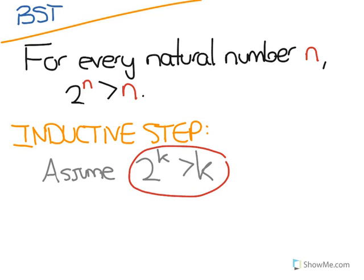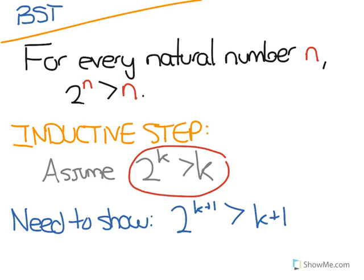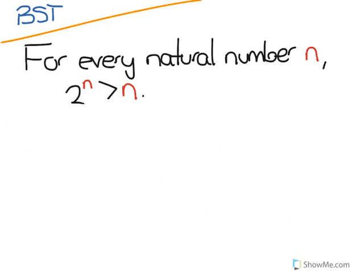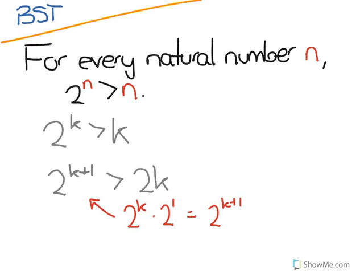So now we have to show that 2 to the k plus 1 is greater than k plus 1. And if we can prove that, that means that our statement is true. So we'll start with our inductive hypothesis that 2 to the k is greater than k. And then we can multiply both sides of this by 2 to get 2 to the k plus 1 is greater than 2k. Using our exponent rules here, and realizing that 2 to the k times 2 to the 1 equals 2 to the k plus 1.